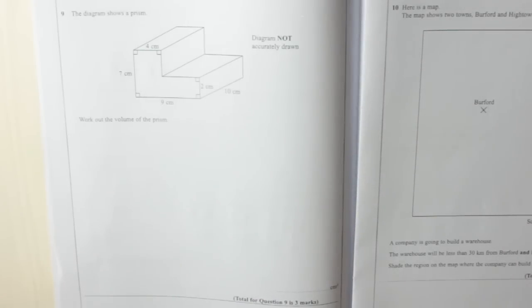Question 9. The diagram shows a prism. Work out the volume of the prism.